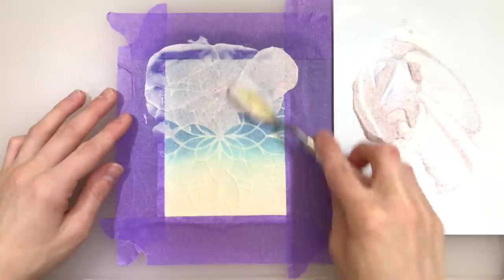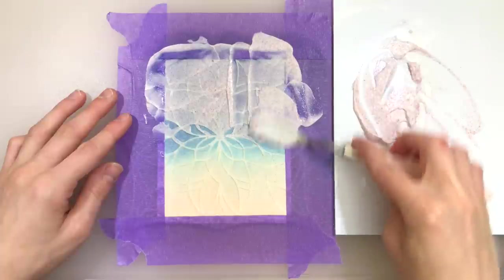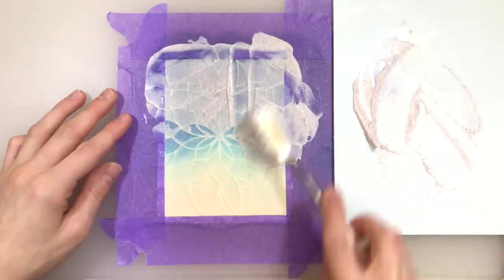Now you'll notice I did not remove the stencil from the ink blended panel that I had already created. I left it in place because I wanted to go back over that ink blending with the paste.